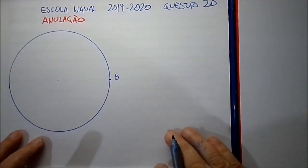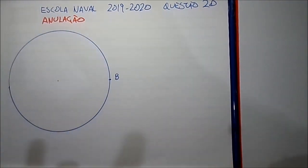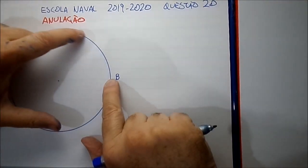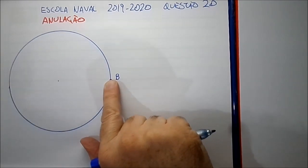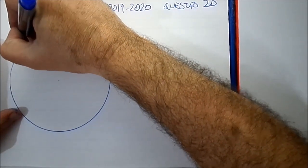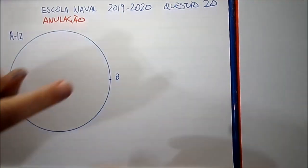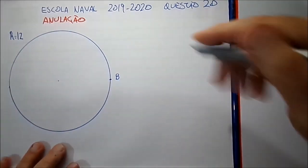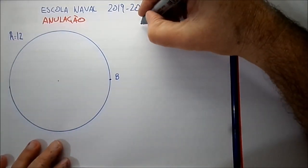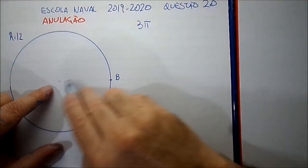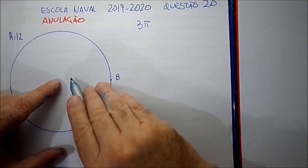A primeira coisa que a gente tem que observar é que essa figura está fora de escala. Como é que um círculo fica fora de escala? Na verdade é o arco que está fora de escala. Porque ele falou que esse raio aqui vale 12, e ele deu que o comprimento do arco AB é 3π.